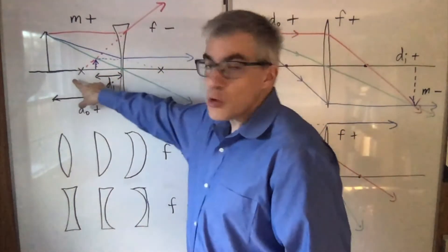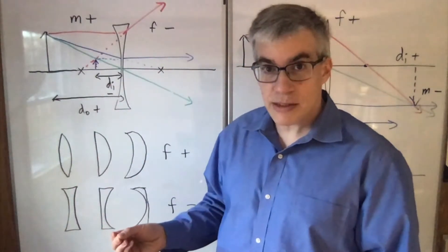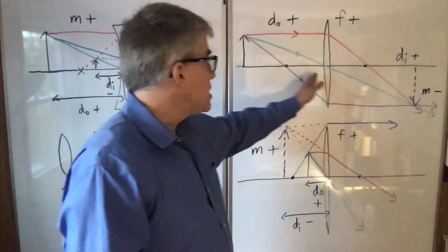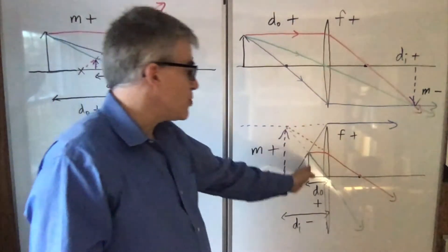Notice I put X's for the focal points for a diverging lens. For converging lenses, we can have two situations. Either the object is beyond the focal point, or it's too close.